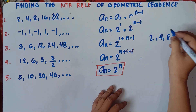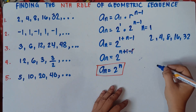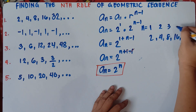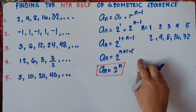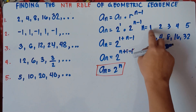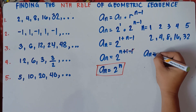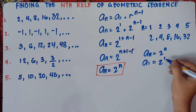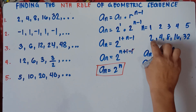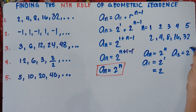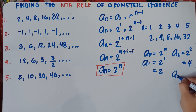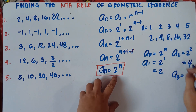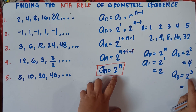So n here is for the position class. Let's have n for our positions: 2 is the first term, 4 is the second term, 8 is the third term, 16 is the fourth term, 32 is the fifth term. If n is 1, a sub 1 equals 2 raised to the power of 1, that is 2 — check. If n is 2, a sub 2 equals 2 raised to the power of 2, that is 4. If n is 3, substitute the value of 3: 2 raised to the power of 3 equals 2 times 2 times 2, that is 8.